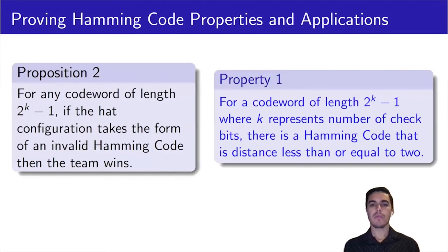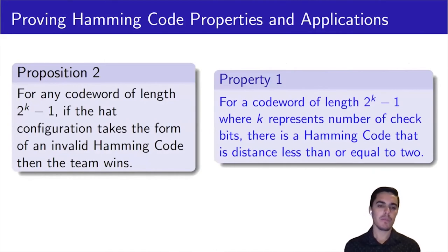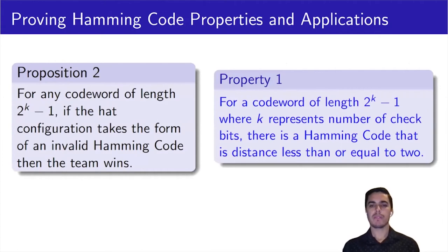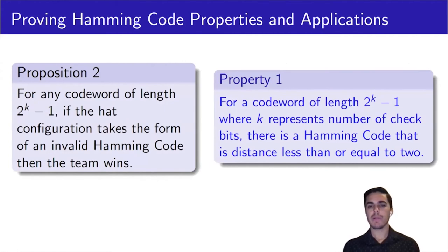The block on the right is an example of a property that I was able to prove using topics in graph theory — this is a property of Hamming codes. I also made connections between the properties of Hamming codes and a game called the hat problem, as indicated on the left block. This allowed me to compute the probability of losing or winning the game, which is dependent on the number of players.